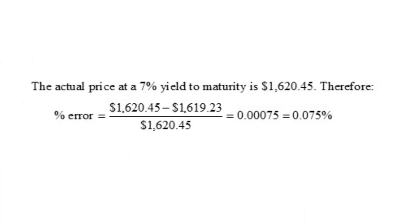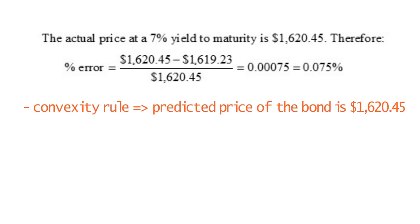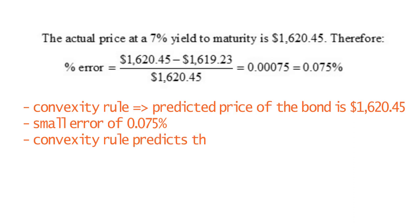Now let's calculate the prediction error of the convexity rule. The actual price at a 7% yield to maturity is $1,620.45. Therefore, the percentage error in the convexity rule is (1620.45 minus 1619.23) divided by 1620.45 equals 0.075%. In summary, based on the convexity rule, the predicted price of the bond is $1,619.23 and it has a very small error of 0.075%, indicating that the convexity rule predicts the bond price more accurately. Thanks for watching.